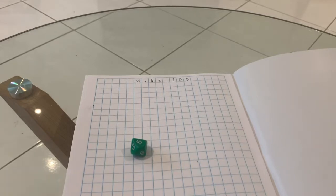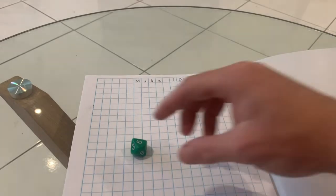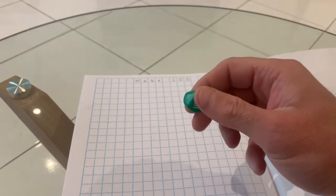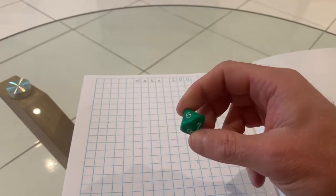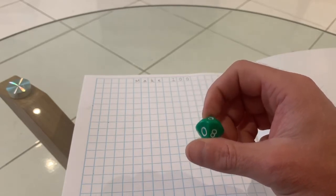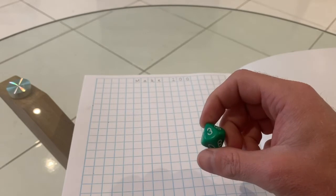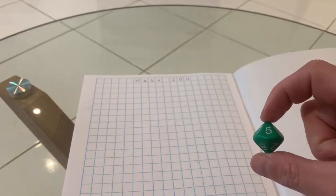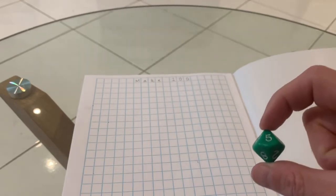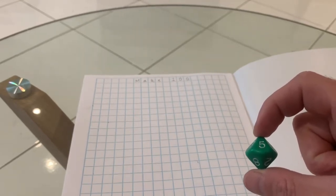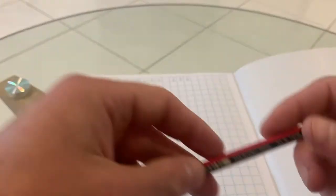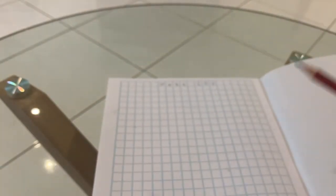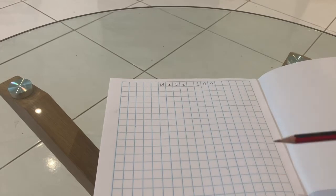The game that we're going to play today is called Make 100 and we're going to use the 10-sided dice that you were given. If you don't have that 10-sided dice, you'll either need to use a dice generator online or perhaps you could have a sibling or a parent call out a number between 1 and 10 for you to add each time.